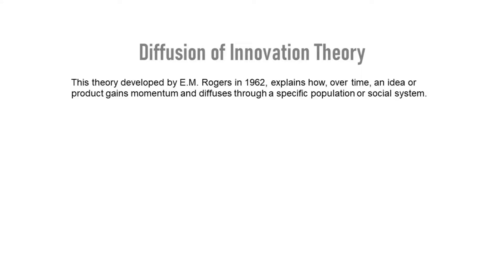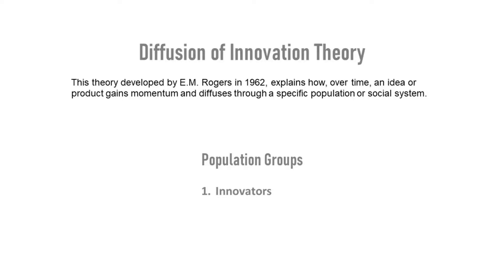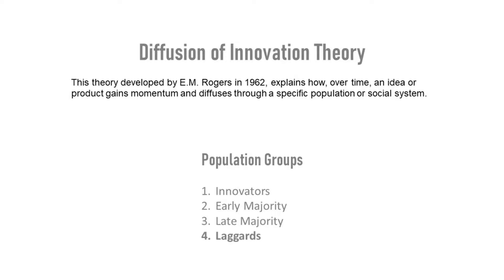Hello everyone. According to diffusion of innovation theory, a society adopts technology step by step. First, there are a group of people who adopt the newest trends and they are called innovators, followed by early and late majorities. The last to adopt technology are called Laggards.